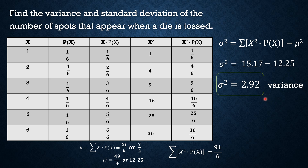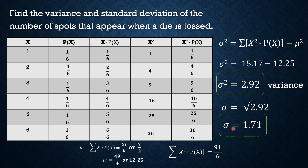Alright, so by getting the square root of the variance, we now have the standard deviation, which is 1.71.